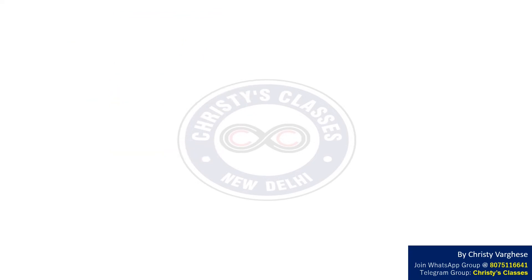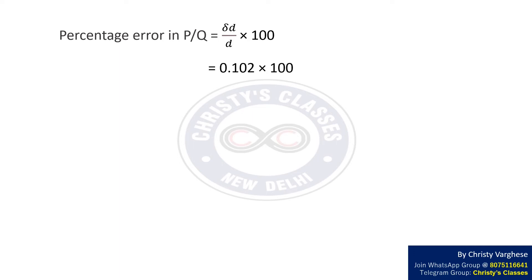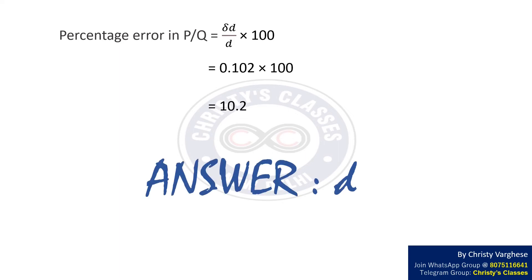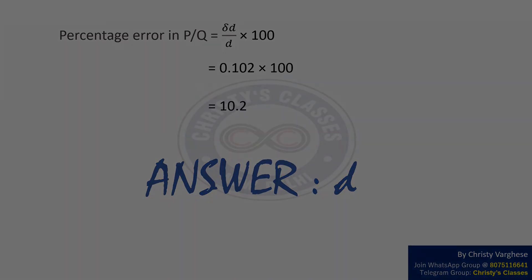Now, the percentage error in P by Q equals delta D by D into 100, which is equal to 0.102 into 100, which is equal to 10.2. Therefore, the percentage random error in P by Q is equal to 10.2, so the correct answer is option D.